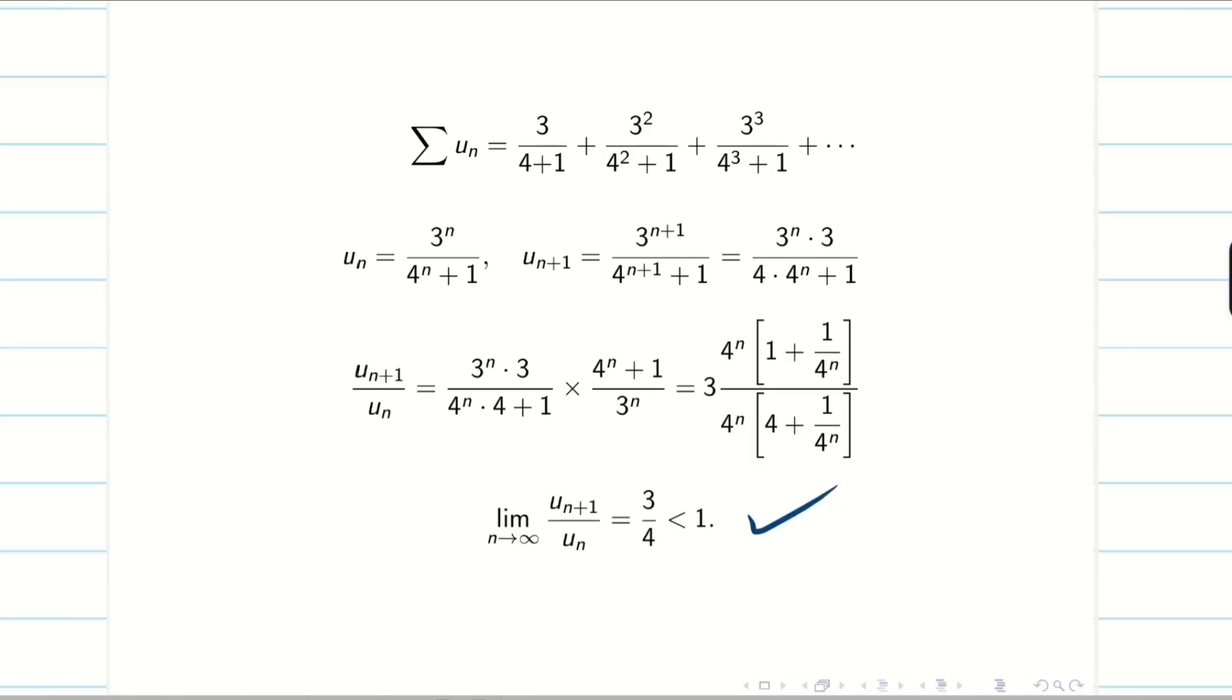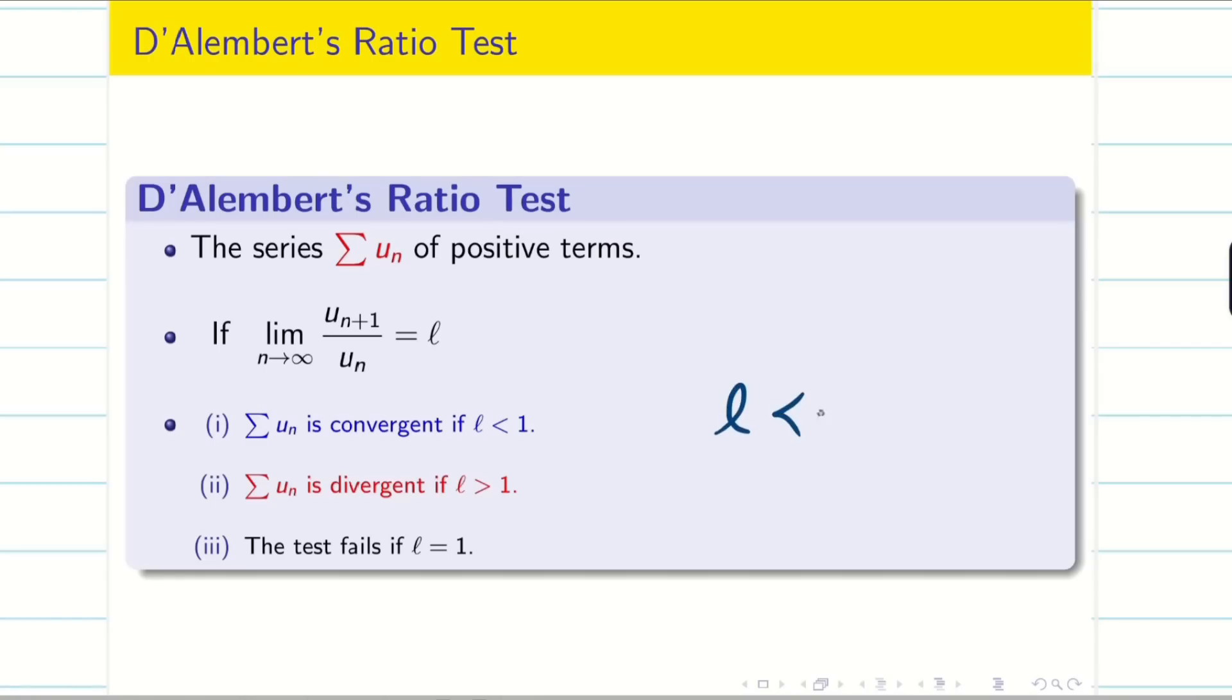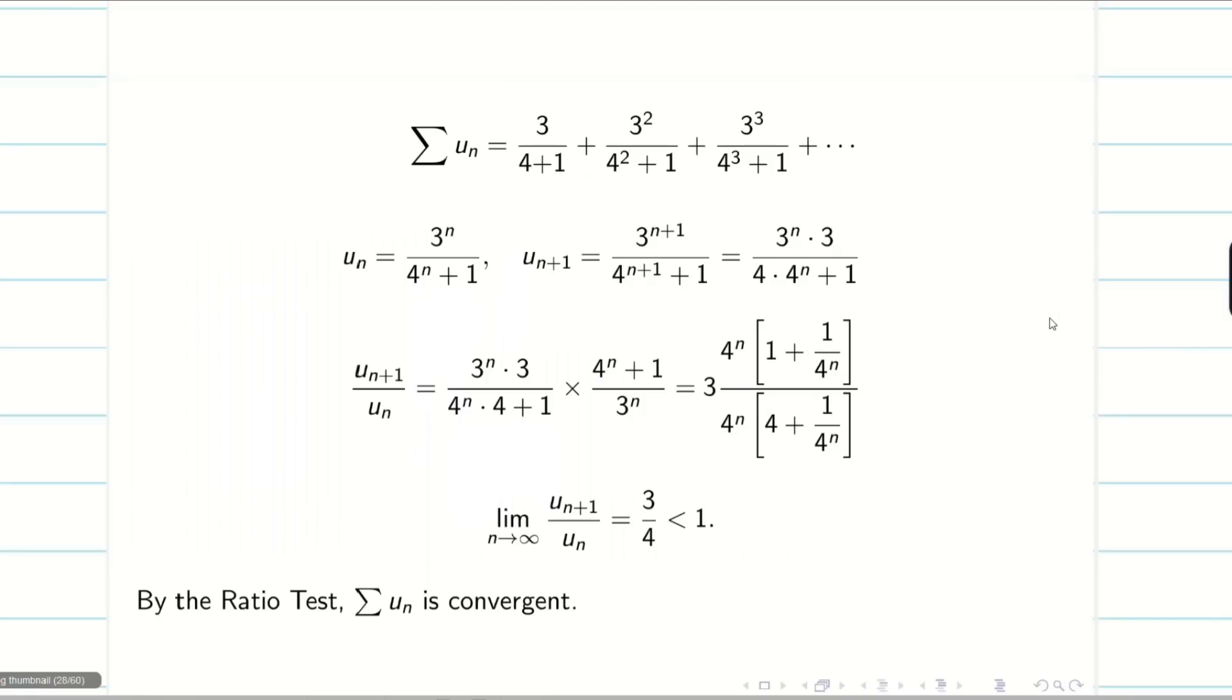Applying limit n tends to infinity for un plus 1 by un, we will be getting 3/4 because this term will become 1 plus 0, this term will become 4 plus 0. Oh, this is less than 1. So by ratio test, if L less than 1, my summation un converges. So we can conclude the series is a converging series by ratio test. This is very important, you have to mention the test. Hope you got the point.